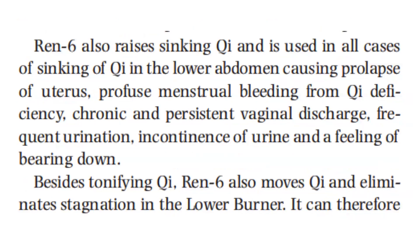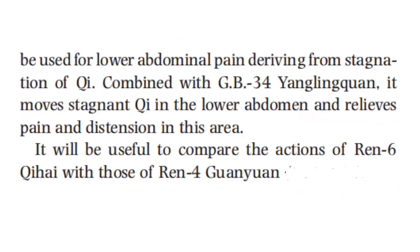REN6 also raises sinking qi and is used in all cases of sinking of qi in the lower abdomen, causing uterine prolapse, profuse menstrual bleeding from qi deficiency, chronic and persistent vaginal discharge, frequent urination, incontinence of urine, and the feeling of bearing down. Besides tonifying qi, REN6 also moves qi and eliminates stagnation in the lower burner. It can therefore be used for lower abdominal pain deriving from qi stagnation — combined with GB34, it moves stagnant qi in the lower abdomen and relieves pain and distension in this area.